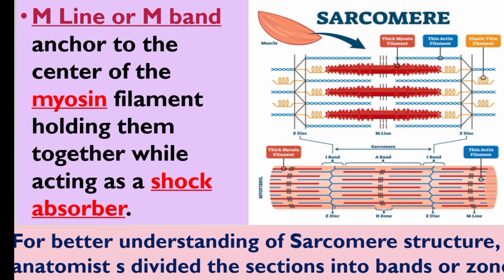In the myosin filament, a line is used to hold them together. The M-line or M-band is anchored to the center of the myosin filament, holding them together while acting as a shock absorber.